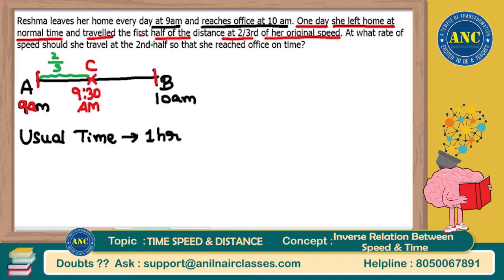Now think logically. If she is traveling at regular speed from A to C and also from C to B, she will take one hour usually. But from A to C she is not traveling at regular speed. She will travel at two-thirds of her regular speed today. Because she is reducing the speed, she will not reach the midpoint at 9:30 — she will definitely take more time. We will calculate when she reaches the midpoint.